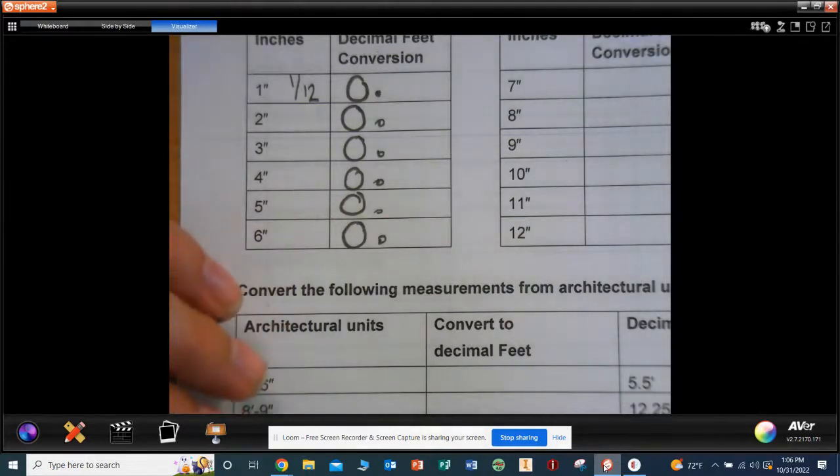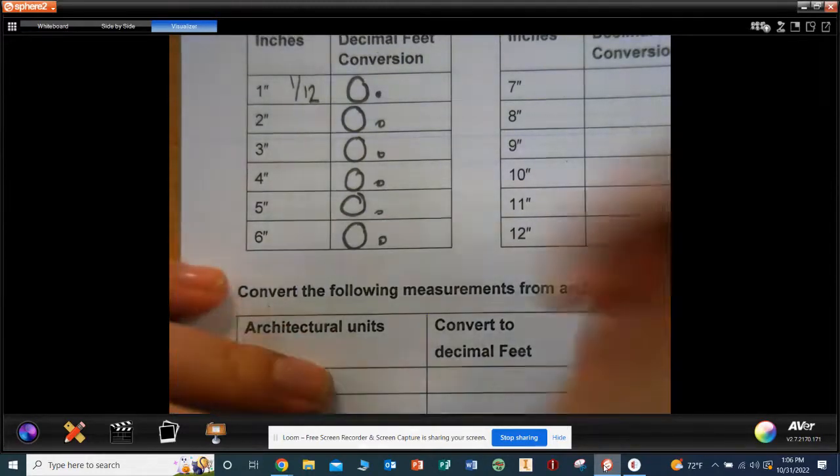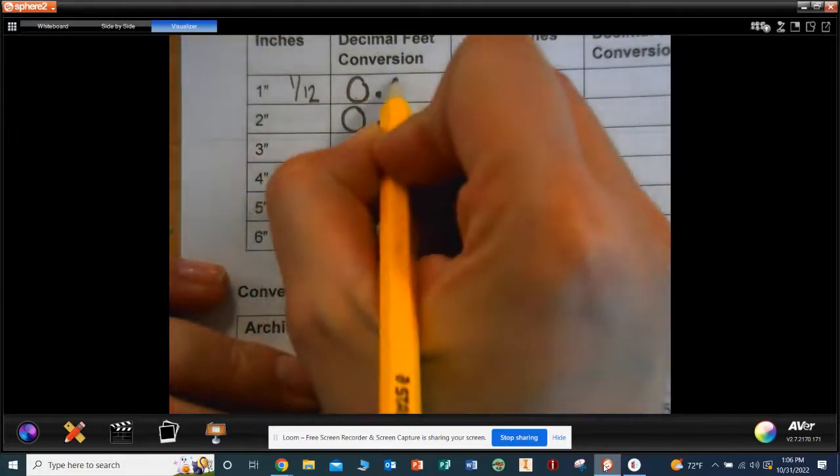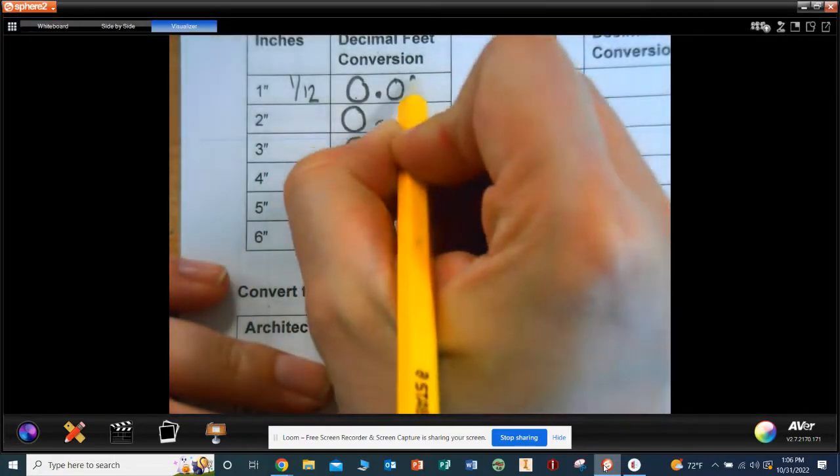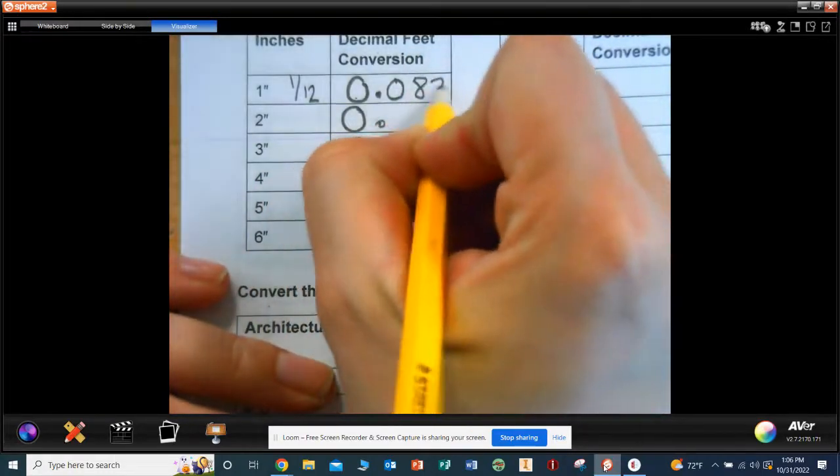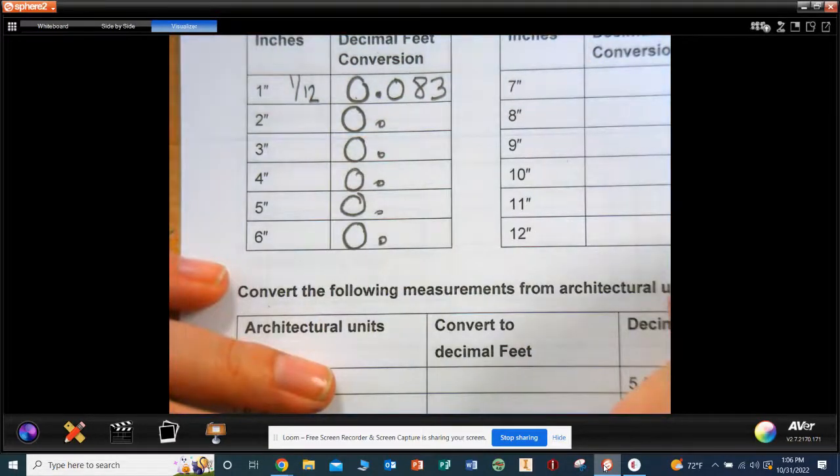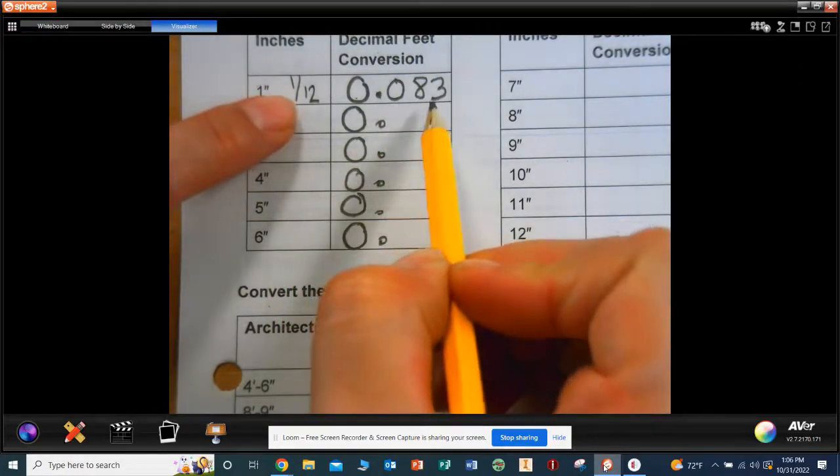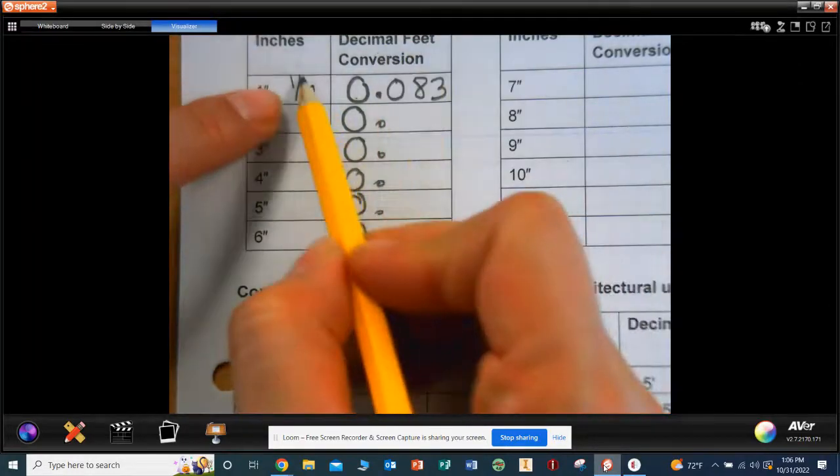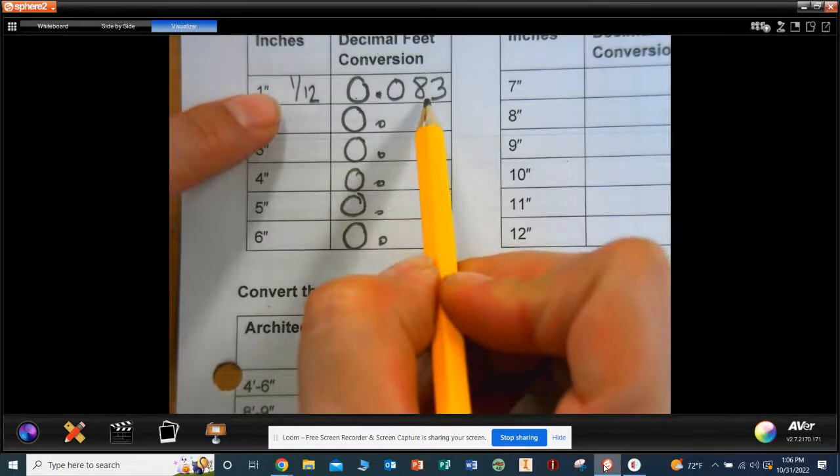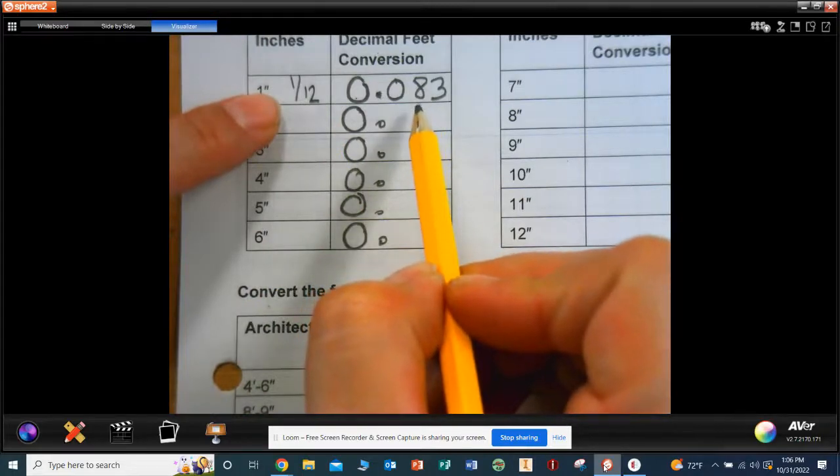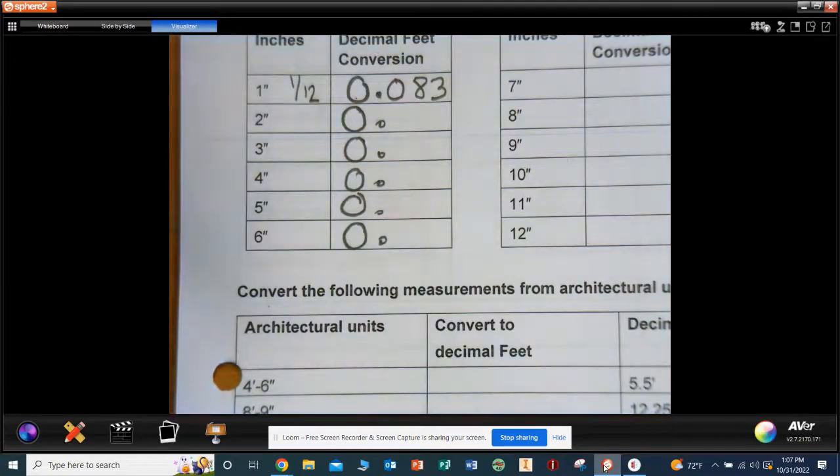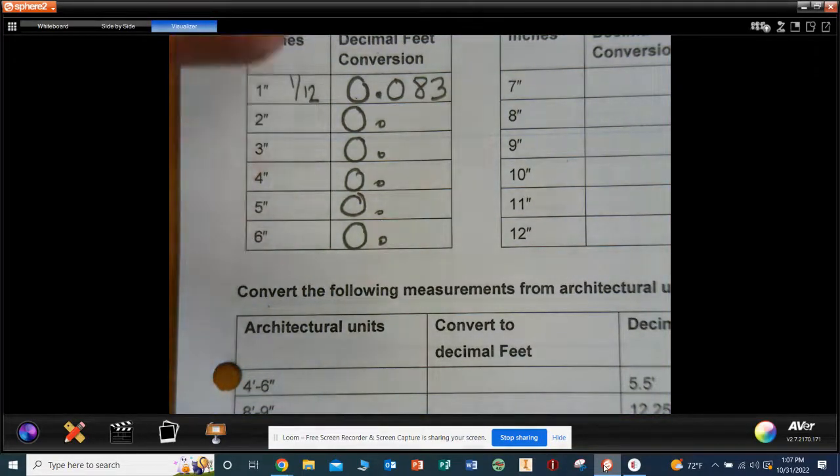First three, so 0.083. Notice, is there a 1 or a 12 in my answer? No. Most of the time, your fraction converted to a decimal don't include those numbers. Like what's one half? It's 0.5, right? You're not going to say one half is 0.12 because there's a 1 and a 2. That would be silly.